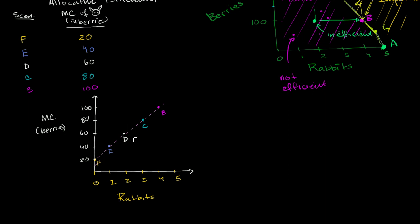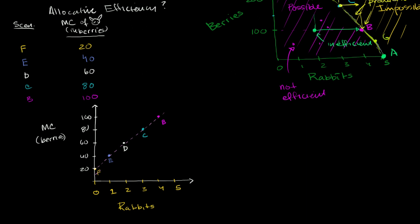We still don't know which scenario to pick. To think about that, I want to introduce something called the marginal benefit — MB. The marginal benefit of an incremental rabbit, and once again we're going to write it in berries. The way to think about the marginal benefit is: if we are the hunter-gatherer, how much would we pay to some hypothetical convenience store in berries — a store that only sells bunnies and only accepts berries — for an extra rabbit?